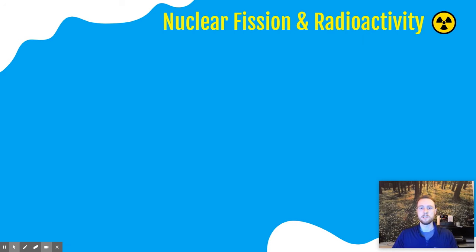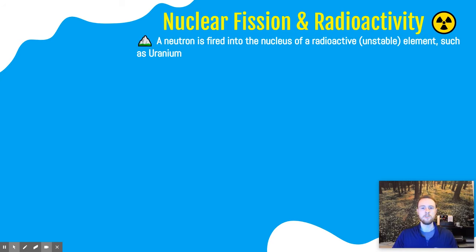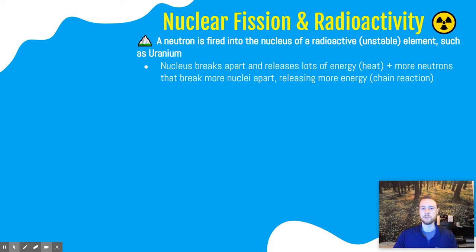The first topic we'll talk about today is nuclear fission and radioactivity. In nuclear fission, we fire a neutron at the nucleus of a radioactive isotope — an element such as uranium or plutonium that has a really unstable nucleus that's prone to breaking apart. When it breaks apart, it releases tons and tons of energy, which is released as heat that we can then use to create electricity. Also, when that nucleus breaks apart, it releases more neutrons that go and hit more nuclei, releasing more energy and more neutrons that continue this process in a big chain reaction.